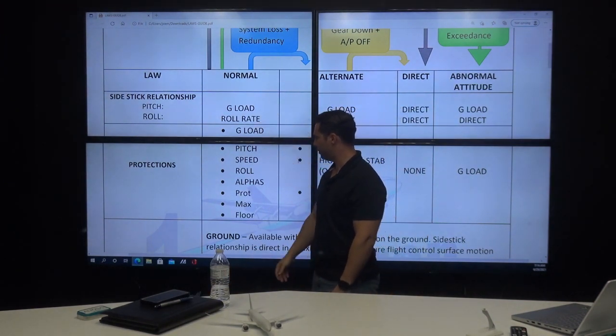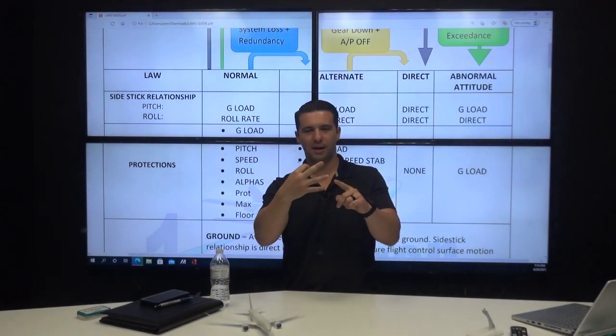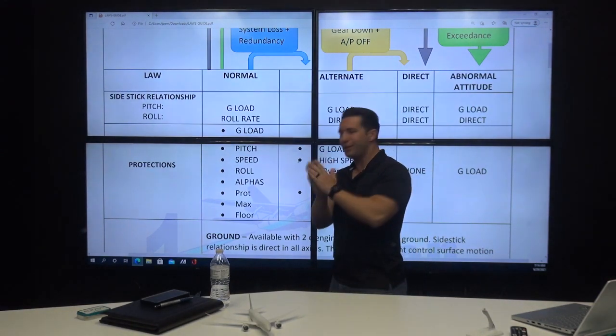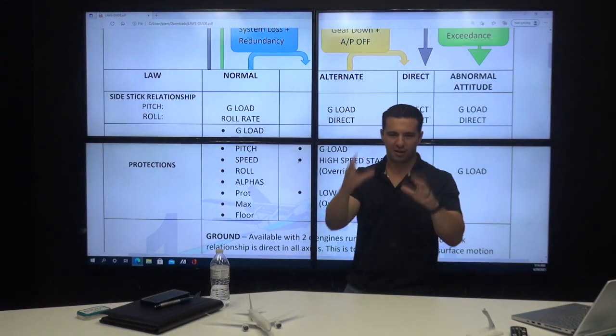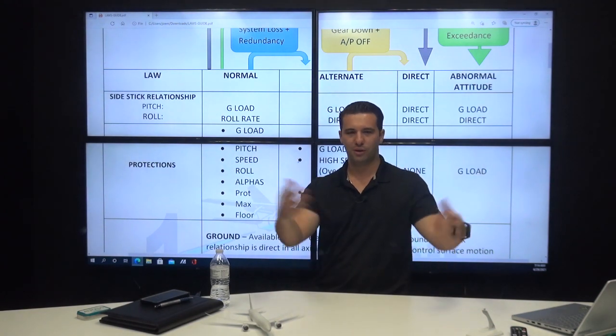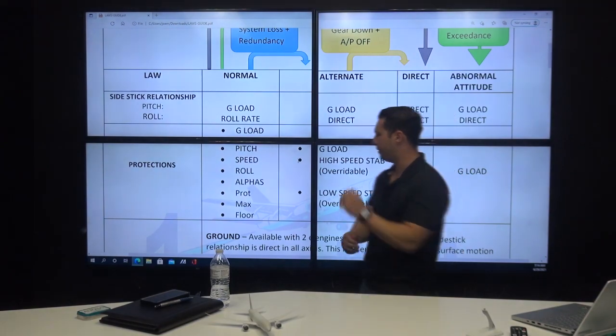Protections, g-load, pitch, speed, roll. Alphas, broken into three: prot, max, floor. Alpha floor, predictive function. Keep in mind, you must say predictive. That is the biggest keyword there. It can skip all other modes. It'll give you toga power, and it'll later on defer to toga lock when we reduce the angle of attack.